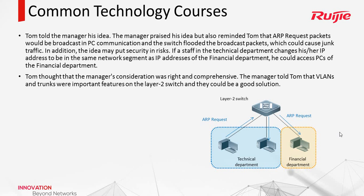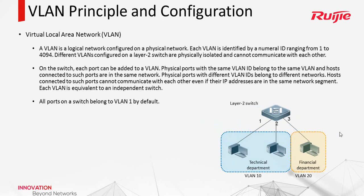Tom asked the manager how to address the problem, and the manager told Tom there is a technology called VLAN. VLAN means Virtual Local Area Network — it is a logical network configured on a physical network. Each VLAN has one VLAN ID. For example, we can put the technical department in VLAN 10 and the financial department in VLAN 20, so they will be in different logical networks and will be isolated.